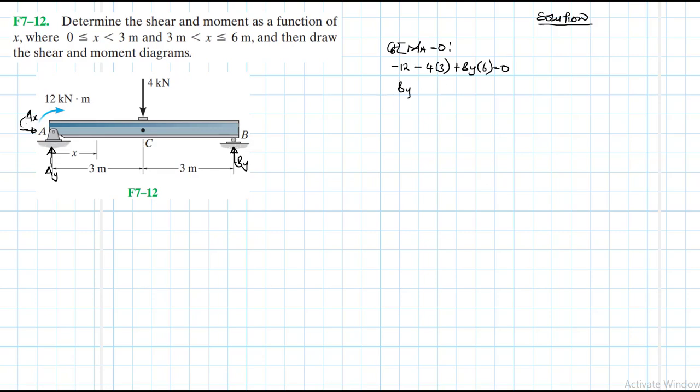Therefore, By is equal to: minus 12 minus 4 times 3, divided by 6. Wait — that gives us: negative 12 minus 12, divided by 6. Therefore, By is equal to 4 kN.